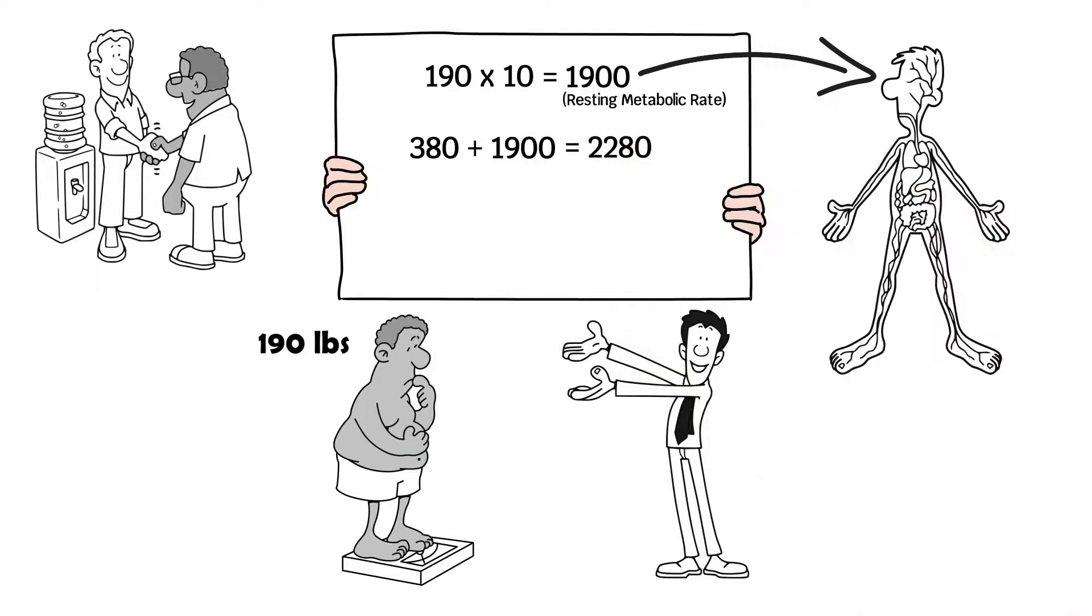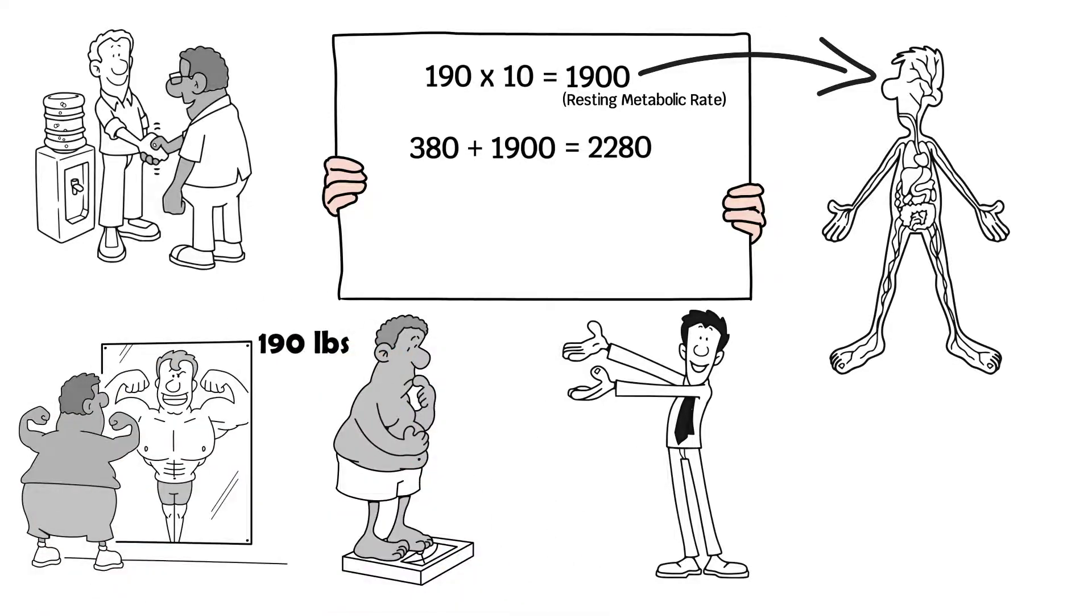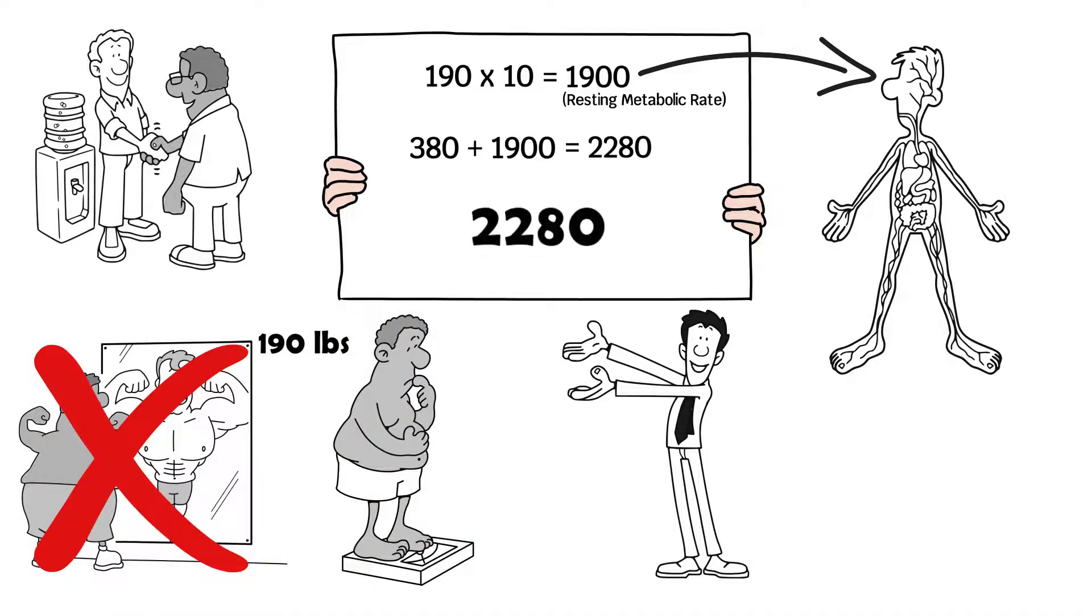If you do exercise and know how much calories you burn, for example, if you have an activity tracker, add that on too. But for now, we will say there is no exercise to add on. So the result would be 2280 calories a day as your BMR.